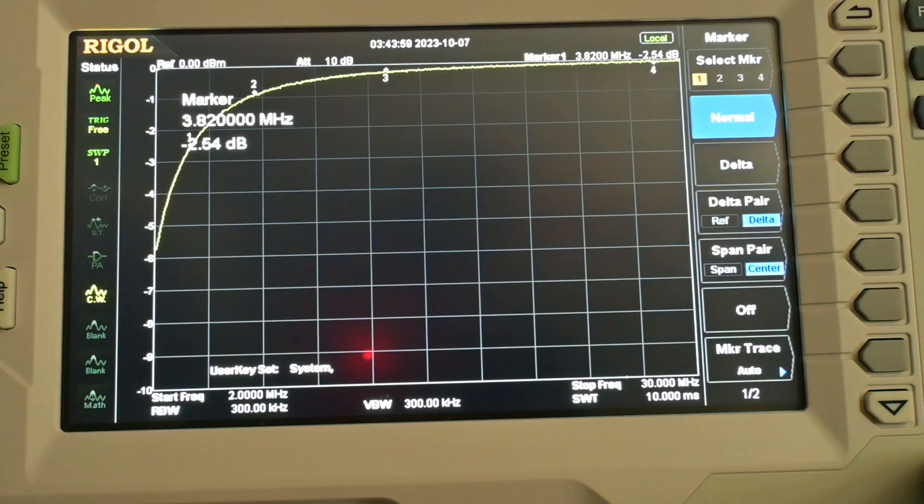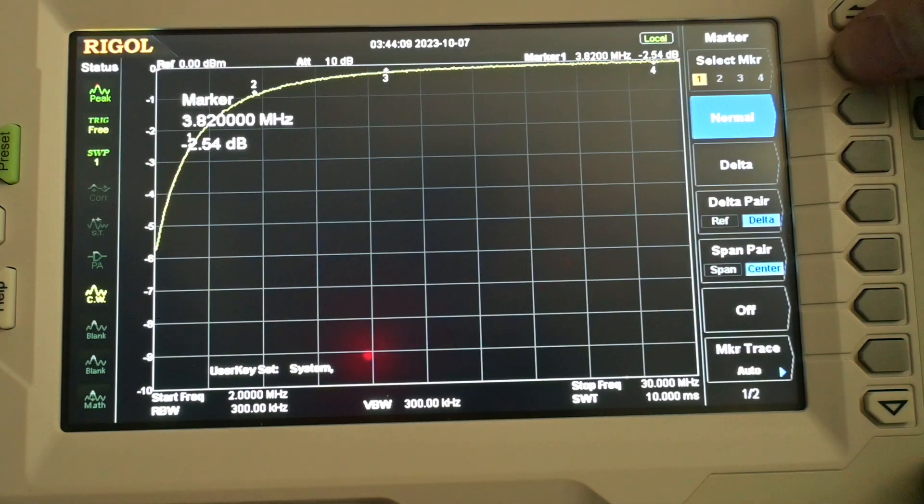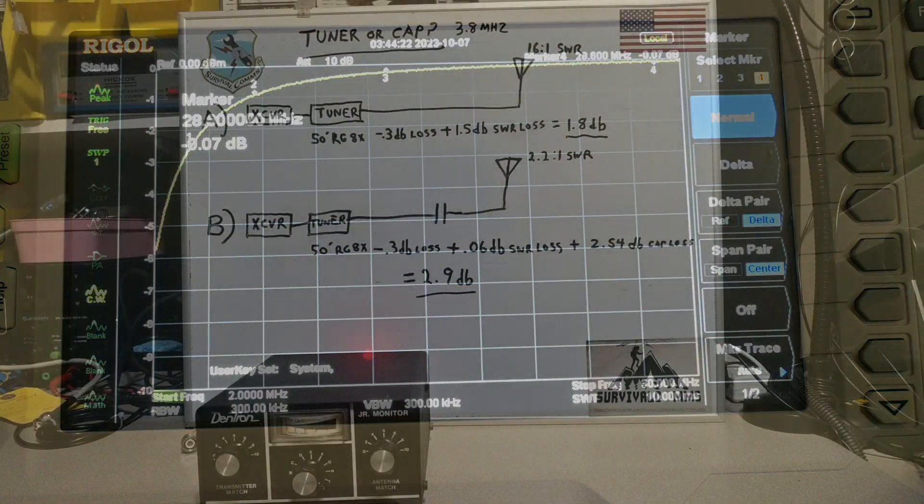Here's a sweep of our device and as anticipated we are experiencing insertion loss in the 80 meter band. We're looking at 2.54 dB of loss across the device. At 40 meters we're looking at 9 tenths of a dB. 20 meters a quarter of a dB and the 10 meter band seven hundredths of a dB of loss.